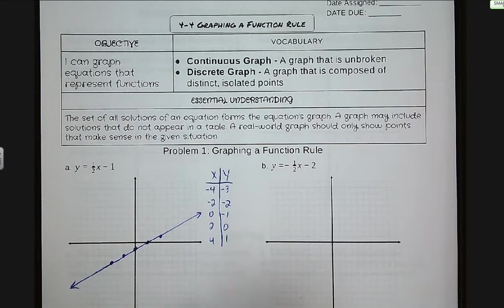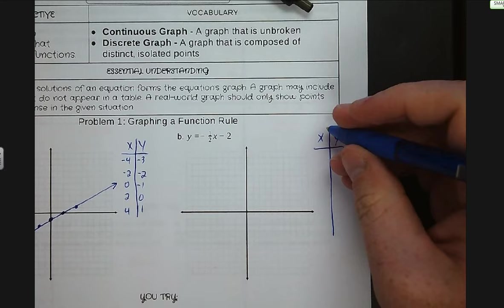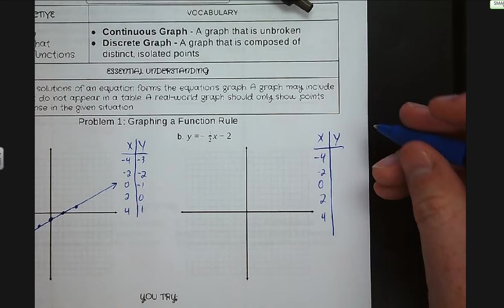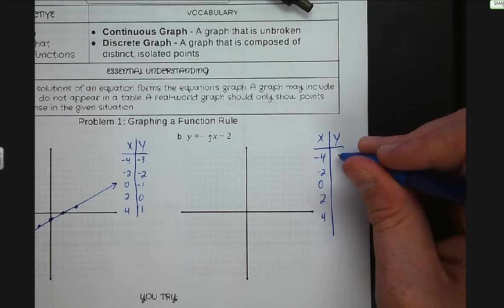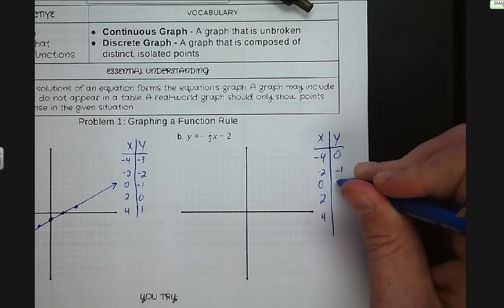Make sure you put arrows on the end of it because we know that line goes off to infinity. For letter B, we're going to start off with our data table. We have a negative one-half this time, so I'm going to still use negative four, negative two, zero, two, and four as my five points. Negative four times negative one-half is positive two, minus two is zero. Negative two times negative one-half is positive one, minus two is negative one. Zero minus two is negative two. And then we have negative three and negative four.